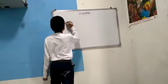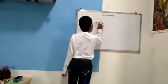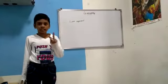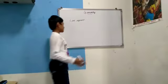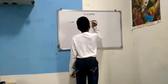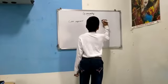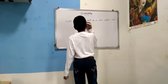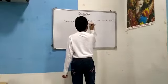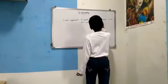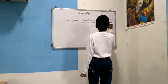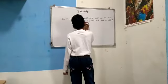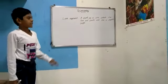Next is line segment. A part of a line which has two end points and has a definite length is called the line segment. Now let's have an example about line segment.